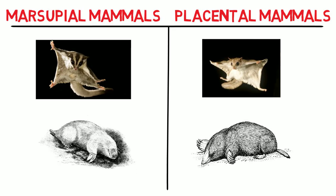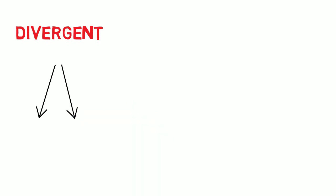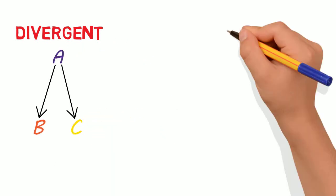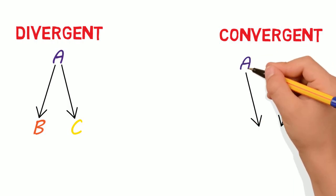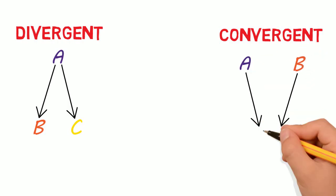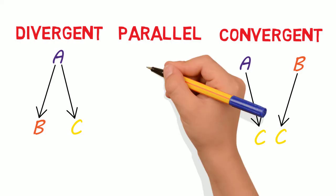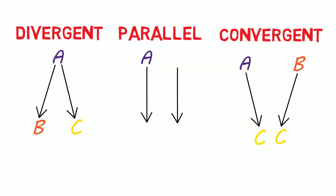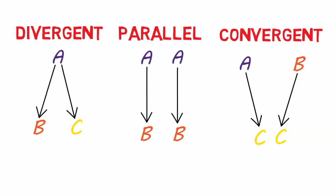Let's tie all this back together by looking at these three main types of evolution once more. Divergent evolution is similar traits from a common ancestor evolving into two unique traits. Convergent evolution is two separate species not sharing a common ancestor evolving similar traits. And parallel evolution is two similar species sharing a common ancestor and evolving the same traits independently.